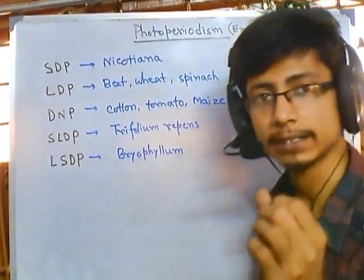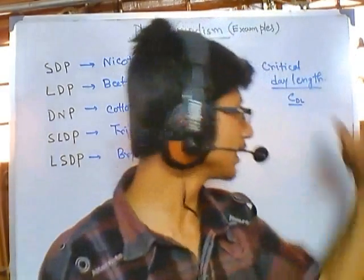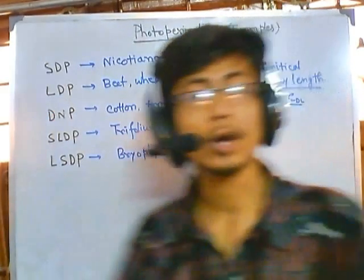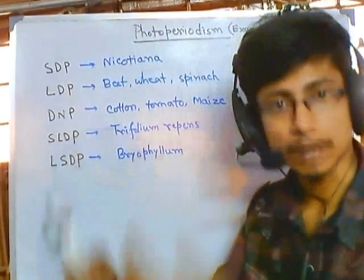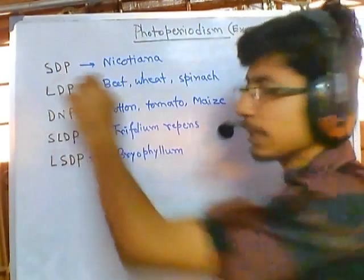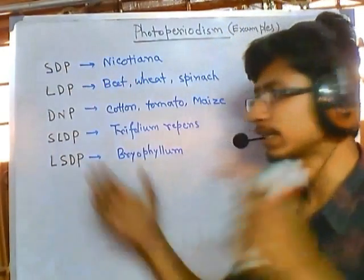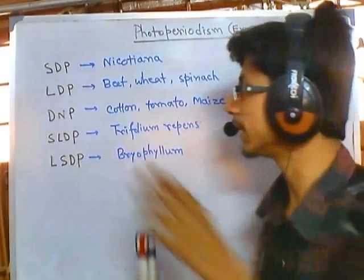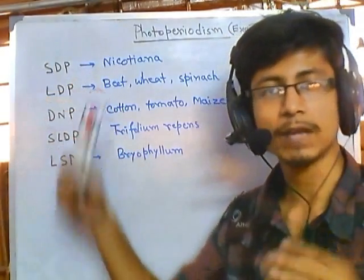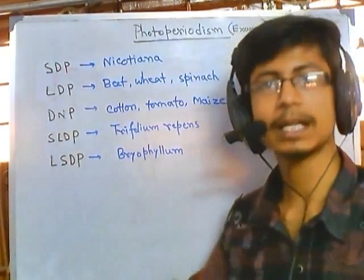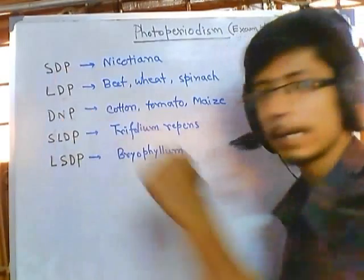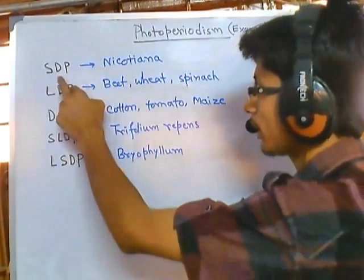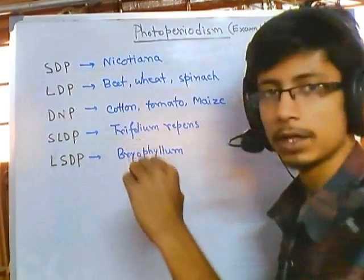Short day plants require less day length than the critical day length to develop flowers — roughly 8 to 9 hours of daylight. Long day plants require more day length than the critical day length — about 12 to 14 hours — to produce flowers. Examples of long day plants are beet, wheat, and spinach; an example of a short day plant is Nicotiana (tobacco).